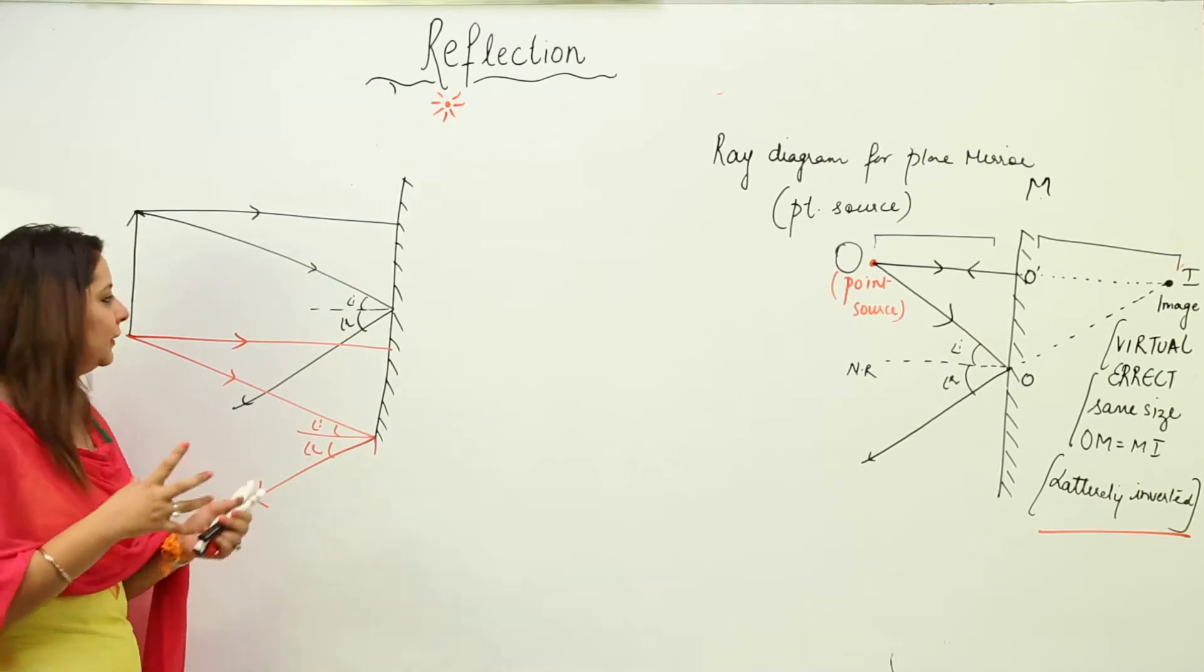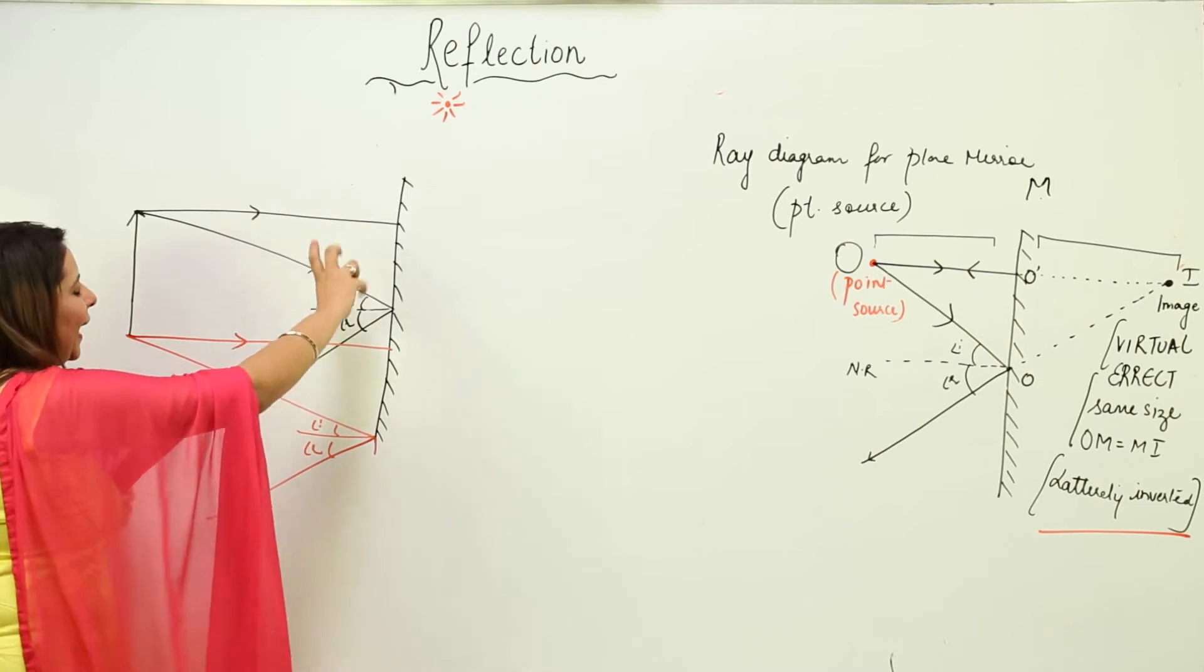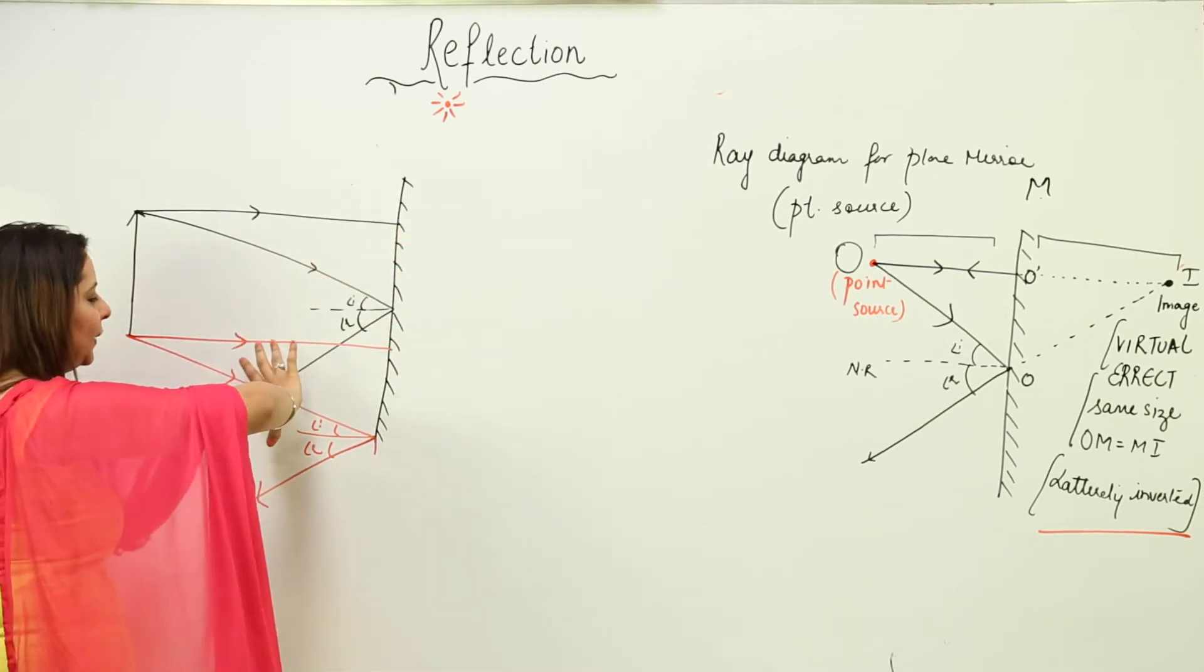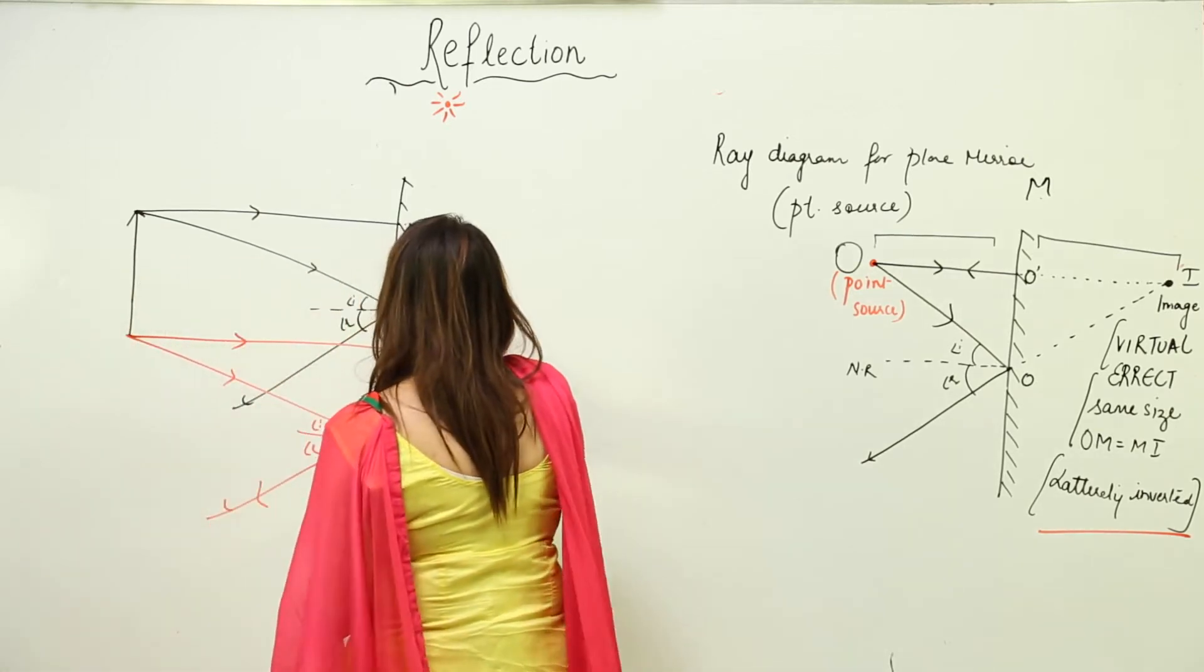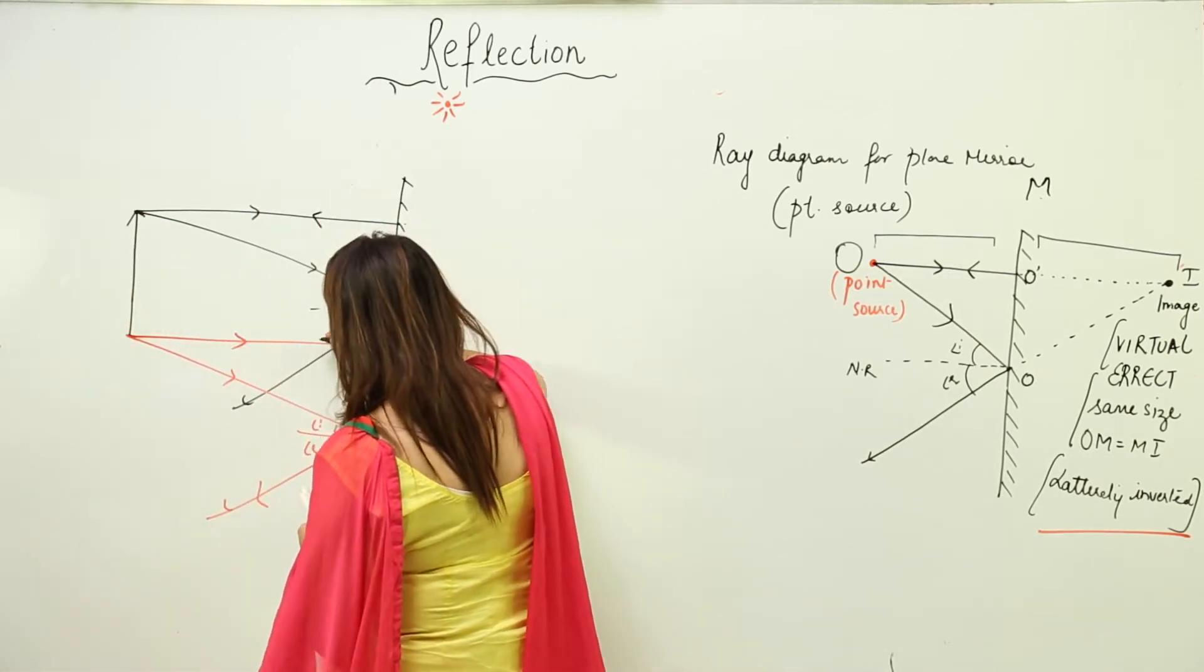Now what to do is make these black rays meet at one point and make these red ones appear to meet at one point. So just extend them. We know that this gets reflected in the same manner.